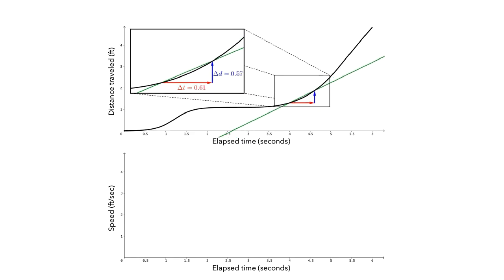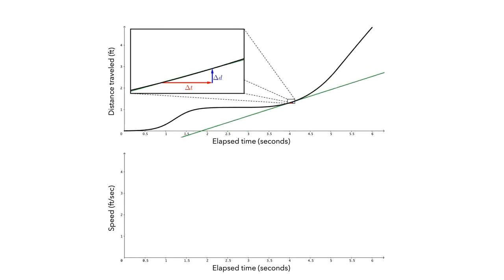Let's decrease delta t. Now, the graph of the function is nearly linear and the secant line is nearly identical to a tangent line. Thus, the slope of the secant line, which we can compute to get 0.614, now gives us the instantaneous rate of change — the value of the derivative — at t equals 4 seconds. Let's record this value of the derivative on the graph by adding a point at t equals 4 seconds with a vertical coordinate of 0.614.